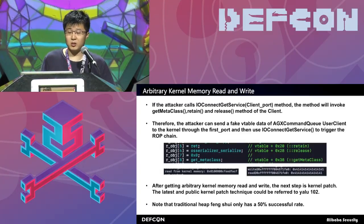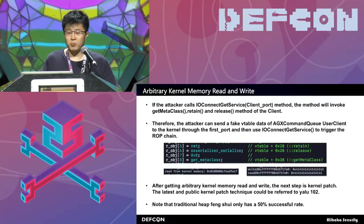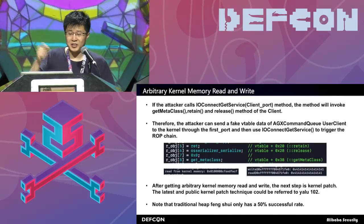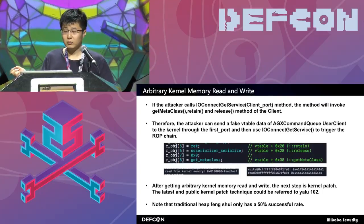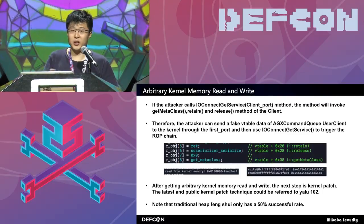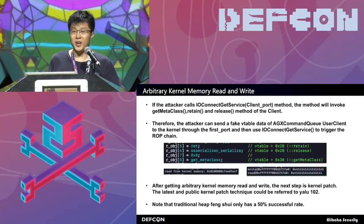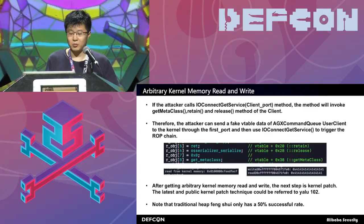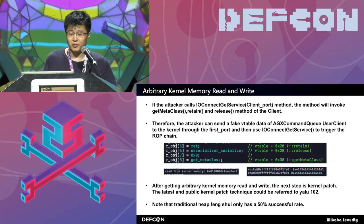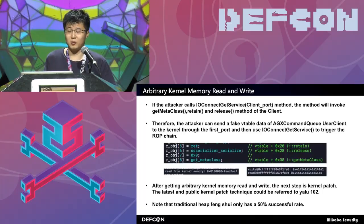After freeing the second_port, the attacker can allocate a user client to hold the spot of the second_port. Then the attacker can get the user client object through the first port. Note that the first 8 bytes of the user client object is the vtable address. Which means you can compare the vtable address in the kernel cache with this dynamic vtable address to calculate the kernel slide. In this case, the kernel slide is 0x1BC00000. After that, the attacker can create a ROP chain, which can be used to do arbitrary kernel memory read. Using OSSerializer with UUID copy, the attacker can copy data from any address to the kernel buffer. Then use the first port to get this data back to usermode. By reversing X1 and X0, you can also get kernel memory write. This traditional feng shui technique is not stable because it needs to run multiple times and use a lot of ROP chains — it only has about a 50% success rate.